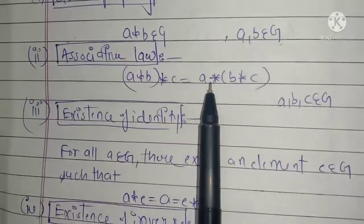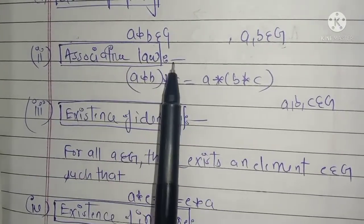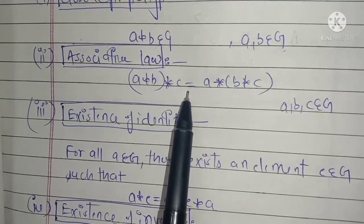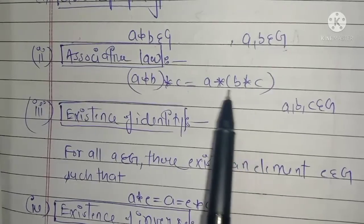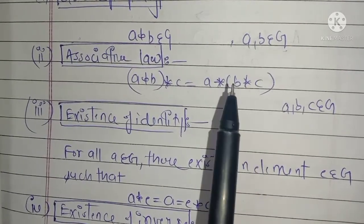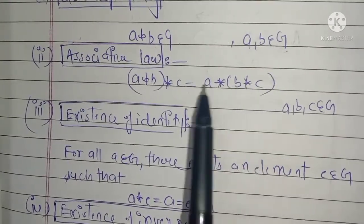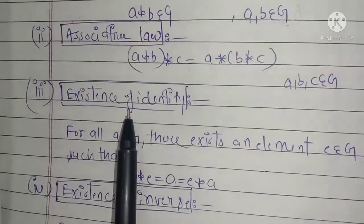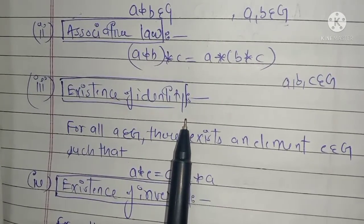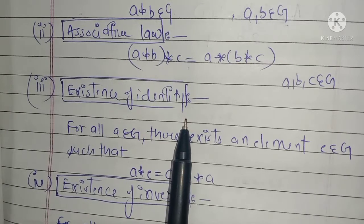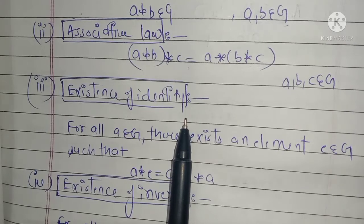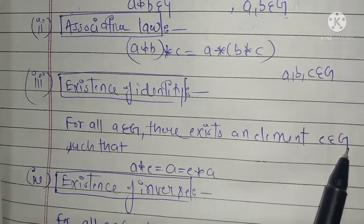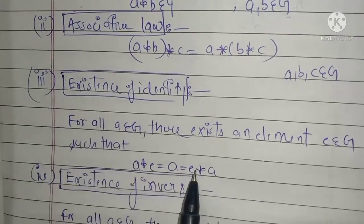Associativity involves three elements. If you have three elements and the order does not matter — when you do (a★b)★c or a★(b★c), both give the same answer — that is the associative law. The third is existence of identity: in the whole set, there must exist an element e such that a★e = e★a = a for all a belonging to G.